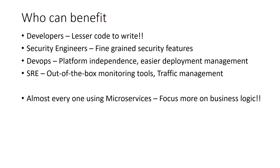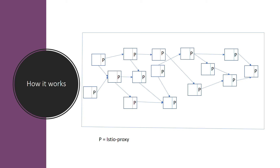Let's quickly see how it works. Consider this as a Kubernetes cluster in which there are microservices. When you install Istio in your cluster, Istio will inject a sidecar — an Envoy proxy — along with every microservice. So in every pod there will be your service as well as the Envoy proxy, and every communication, incoming or outgoing, will be routed through this Envoy proxy.